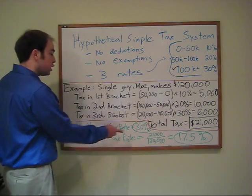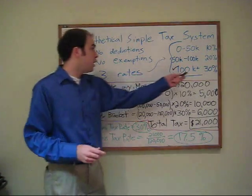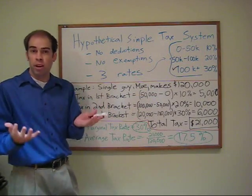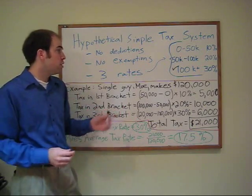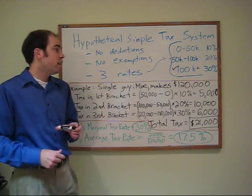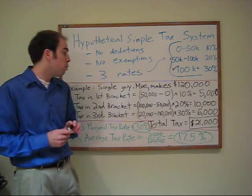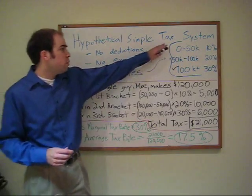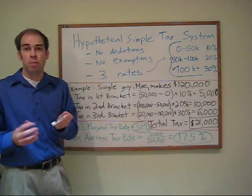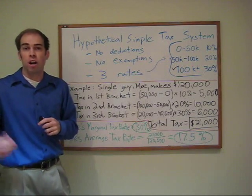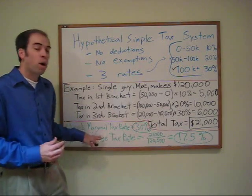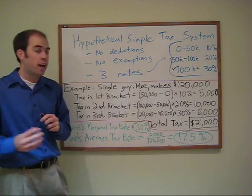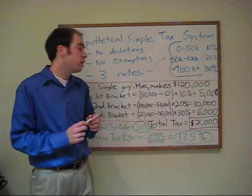Moe's marginal tax rate is 30%. That's because if Moe earned another $10, the government would take three of that. If he earned another $100, the government would take another $30. So government is taking 30% of each additional dollar Moe makes. That's the marginal tax rate, and that's what matters for economic decisions going forward. What matters is the marginal cost — the additional cost — which is what the word 'marginal' means in economics: additional. The additional cost versus the additional benefit of working that extra hour or investing that additional dollar of income.